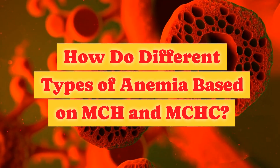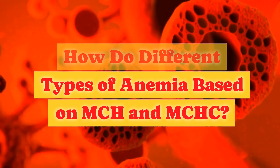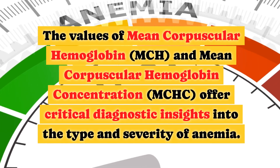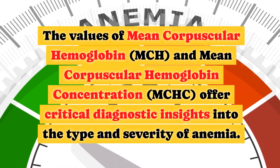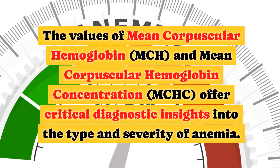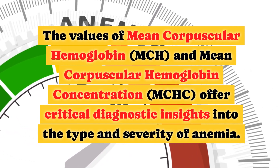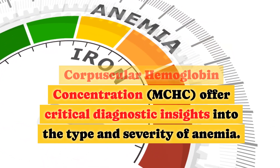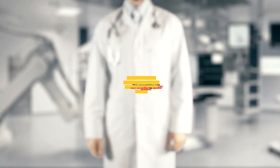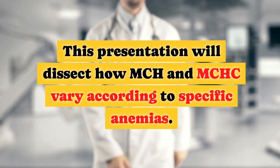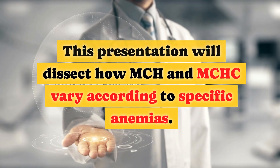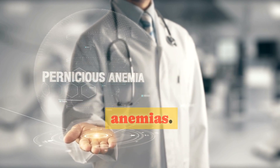How do different types of anemia differ based on MCH and MCHC? The values of mean corpuscular hemoglobin, MCH, and mean corpuscular hemoglobin concentration, MCHC, offer critical diagnostic insights into the type and severity of anemia. This presentation will dissect how MCH and MCHC vary according to specific anemias.